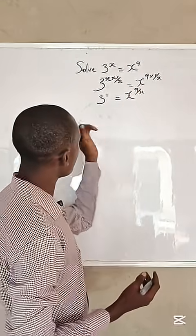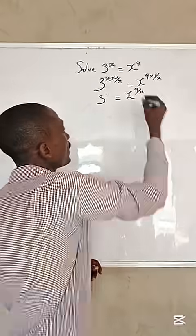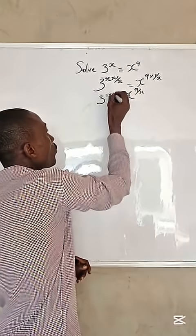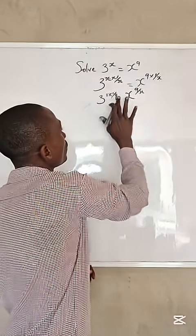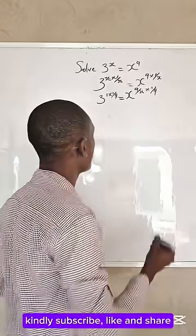Next step is to divide both powers by the inverse of 9. That is, multiply this by 1 over 9, and also multiply this by 1 over 9.